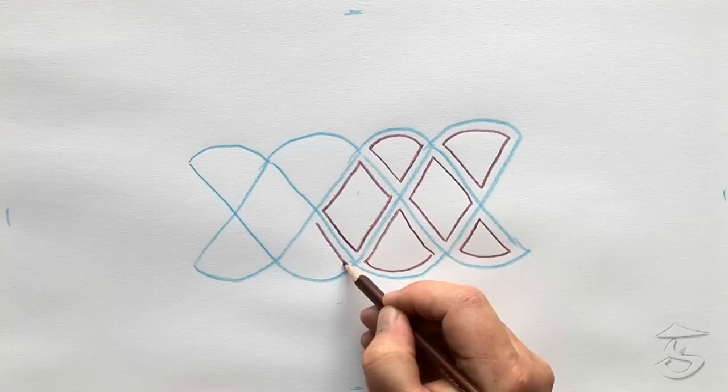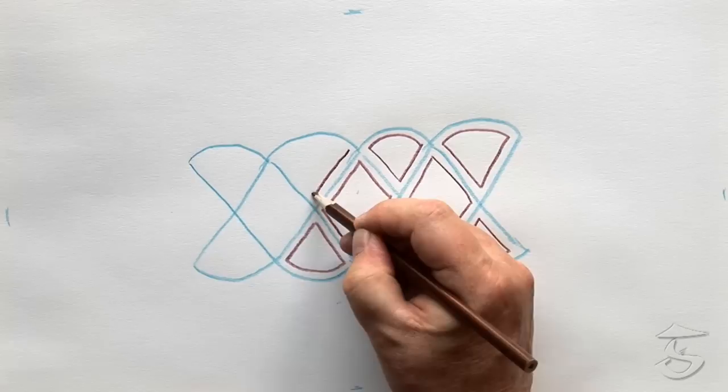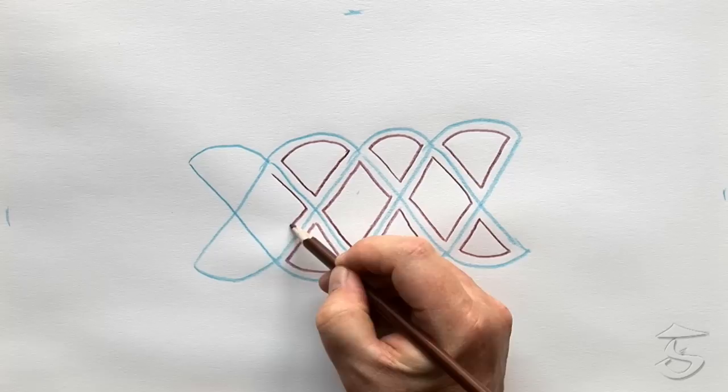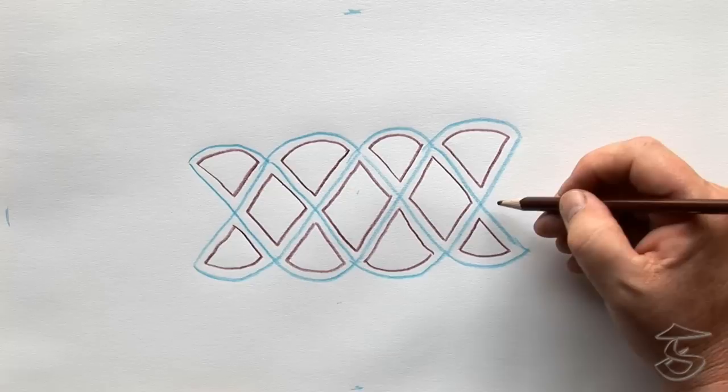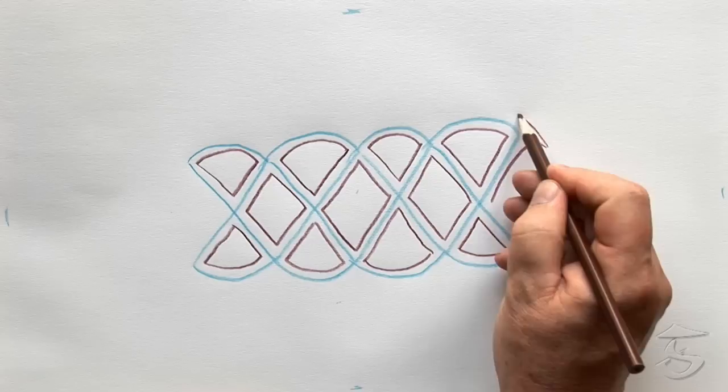Now this is called the Knot of Solomon because there's two separate knots or lines that have woven together here. So then we have all the inside done. Now we'll do the outside. And I'm going to add a little bit of embellishments here. I think I'm going to have a little hook to make it look more interesting.